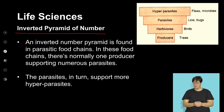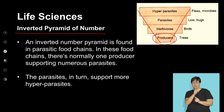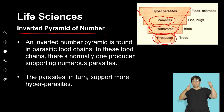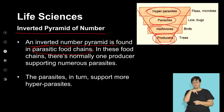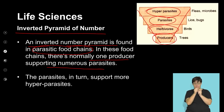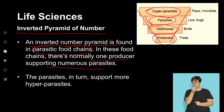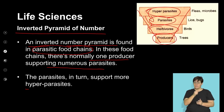We also have inverted pyramids. If we count the number of individuals, a single tree provides habitat and food for different herbivores and birds, which in turn have parasites living on them, and those parasites have further parasites called hyperparasites. So we see an increase in the number of individuals rather than energy. An inverted pyramid of numbers is found in parasitic food chains, where normally one producer supports a number of different parasites or individuals that feed off each other.